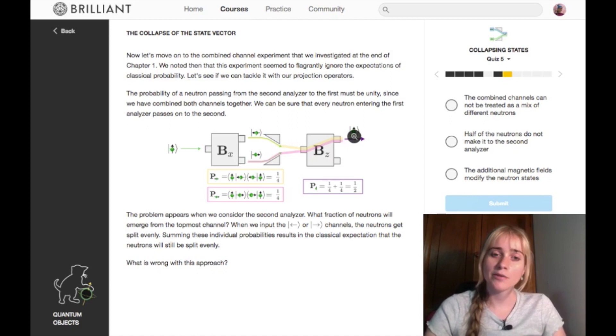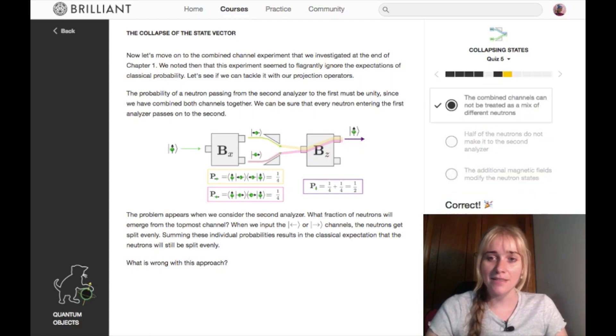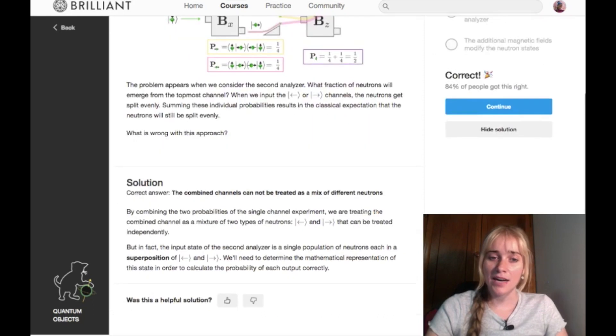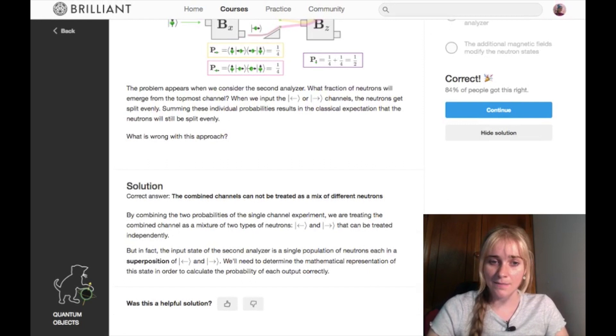So this is where we left off last time. We were talking about this experiment where we were recombining two channels, and in our combined channel we were getting 100% spin up, which made us think that there was some memory that the quantum particles had where they could remember all the way back to what they were here. For some reason it hadn't been reset by this experiment in the middle, which usually is what would happen. So we discovered that our mathematical way of representing the probability of this added to the probability of this was not giving us this probability here. There was something wrong with our mathematical approach with classical probability. The fact was that the combined channels here could not be treated as just a mix of different neutrons, but we needed to devise some mathematical framework to represent that these neutrons here that have been combined are a superposition of spin left and spin right.